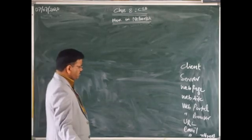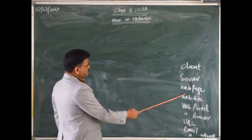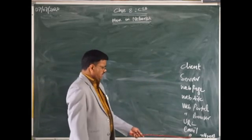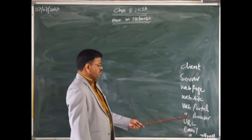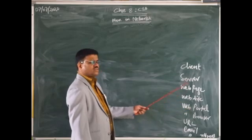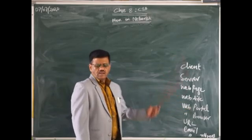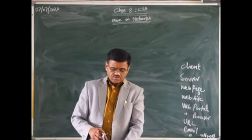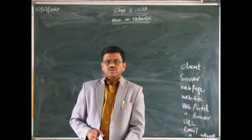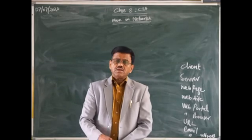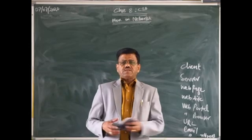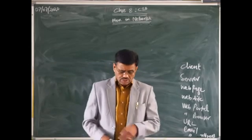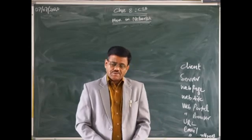So these are all the 9 terms — Email address, Email, URL, Web browser, Web portal, Website, Web page, Server, and Client. Kindly look at page number 170 of chapter 8. It is very self-explanatory and simple. Kindly practice. We shall meet in the next class. Bye-bye, take care.